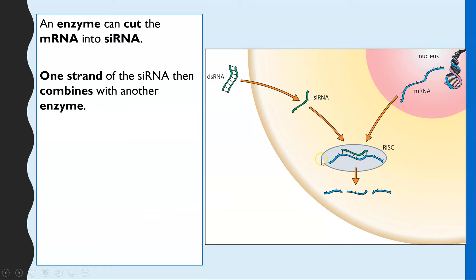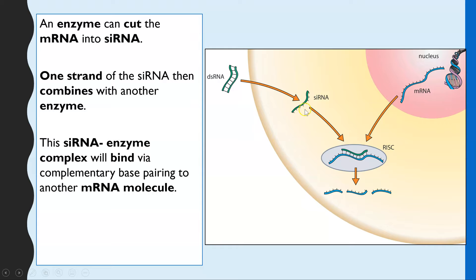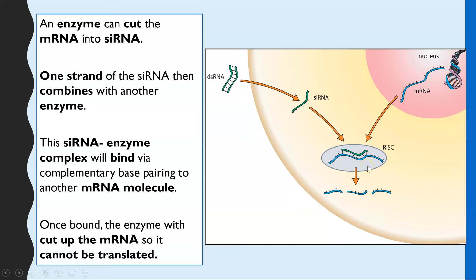The siRNA then combines with another enzyme within the cytoplasm, forming what we call an siRNA-enzyme complex. Because the siRNA is single-stranded, it is able to line up opposite any complementary base sequences of mRNA. This brings a small double-stranded section together along with the enzyme attached to the siRNA. When that siRNA-enzyme complex binds to freshly transcribed mRNA, the enzyme cuts that mRNA.